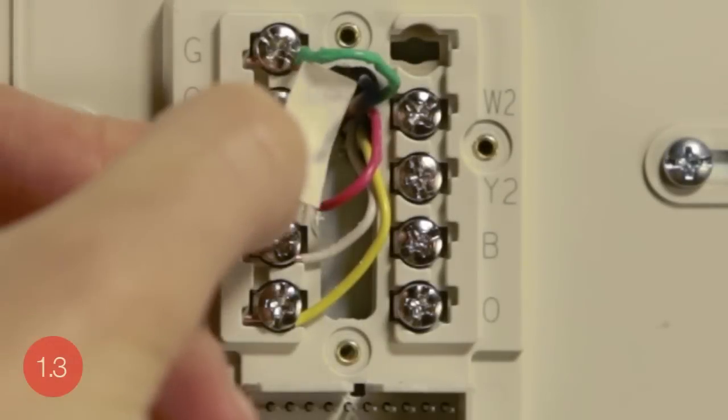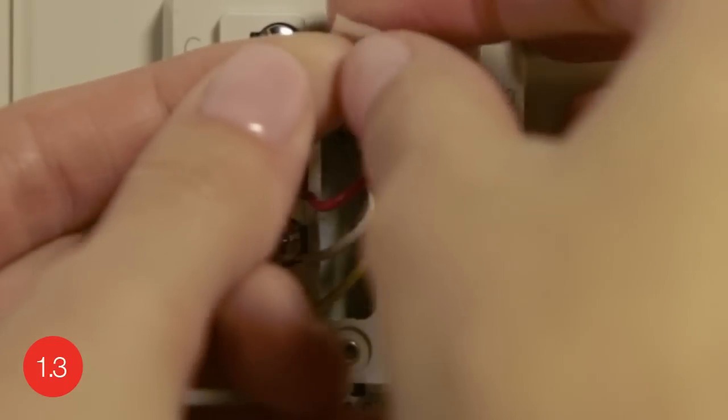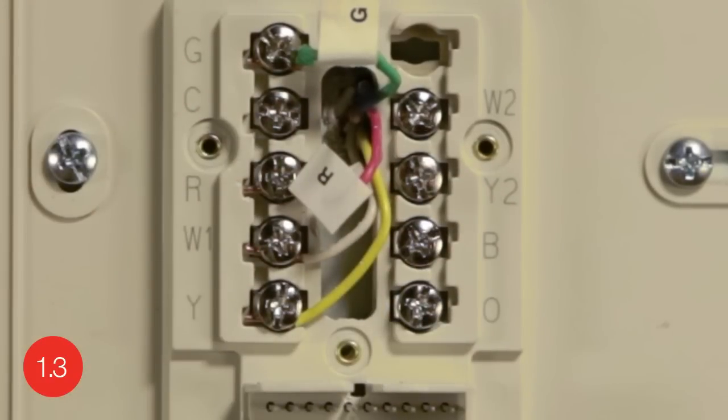Next, use the supplied sticky tags to label each wire according to the letter on the terminal in which it is inserted. Do not label the wires based on their color because wire color does not necessarily indicate the wire's function.